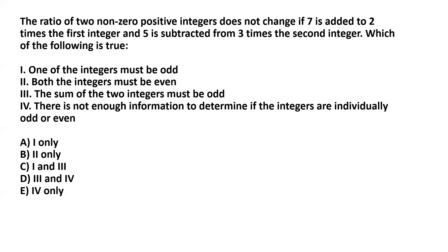So how do we approach this problem? We start with whatever is given, which is the ratio of the two integers. Let's denote those two integers by x and y, remembering that x and y are positive integers and non-zero.